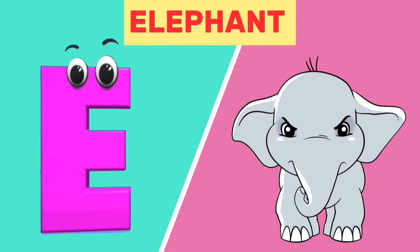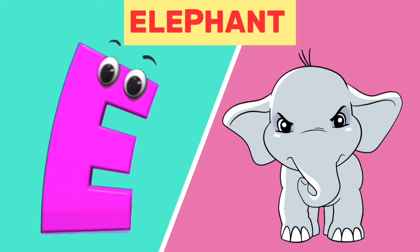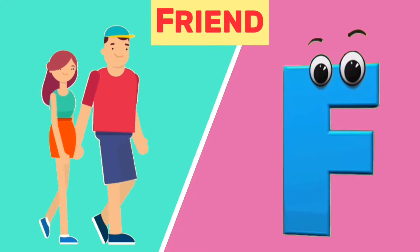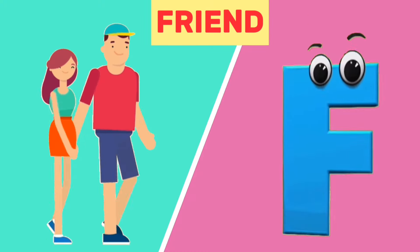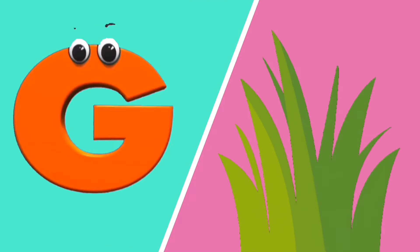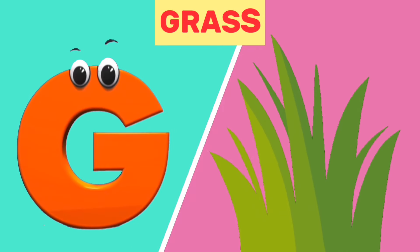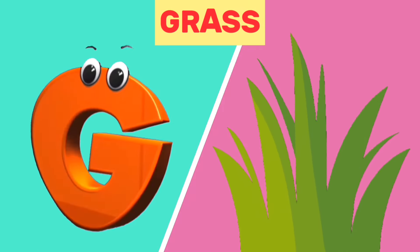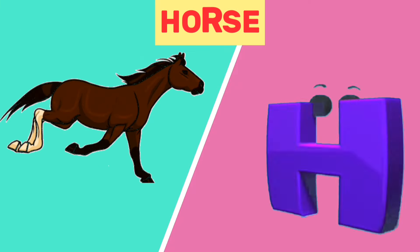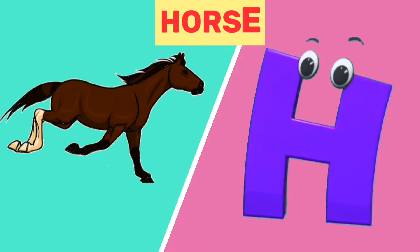E is for elephant, e, elephant. F is for friend, f, friend. G is for grass, g, grass. H is for horse, h, horse.